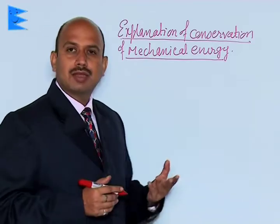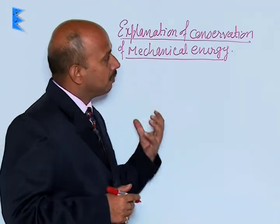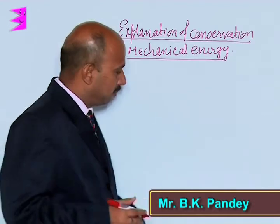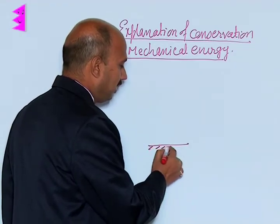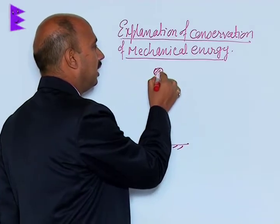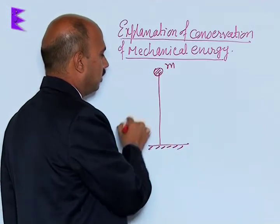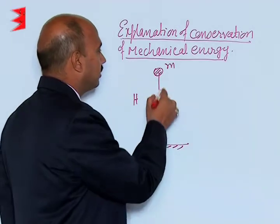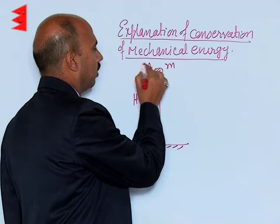We will explain conservation of energy with the help of an example. Suppose this is a ground level, a ball is at height h of mass m. This height is h, and this position is referred to as point A.